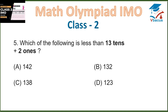Question 5: Which of the following is less than 13 tens plus 2 ones? We have to calculate: 13 tens means 130, plus 2 ones is 132. So 132 is option B, and option B is correct.